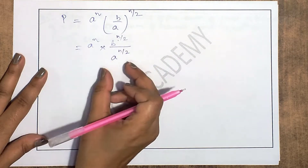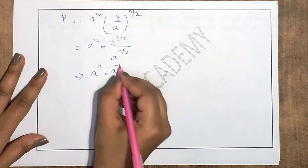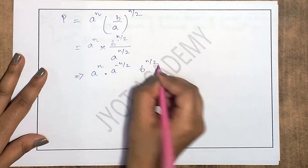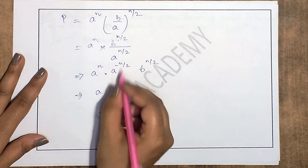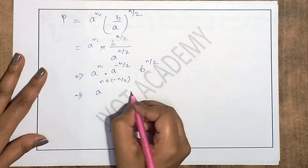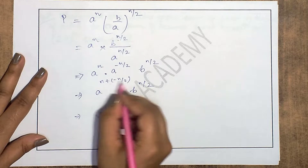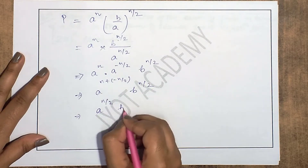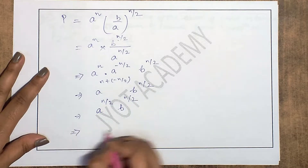Expanding (b/a)^(n/2): in the denominator, a gets power −n/2. And b gets power n/2 as it is. So combining the a terms: a^n × a^(−n/2) gives a^(n/2). Therefore we get P = a^(n/2) · b^(n/2).